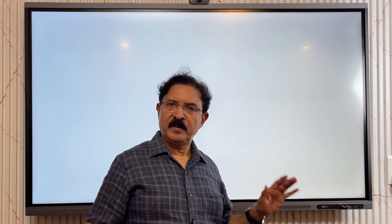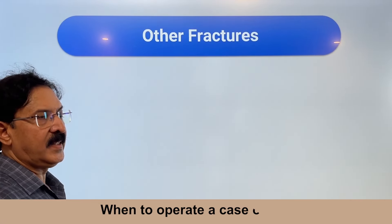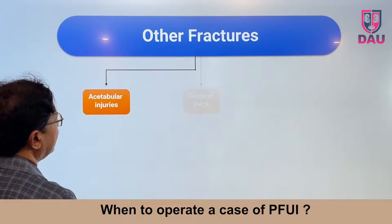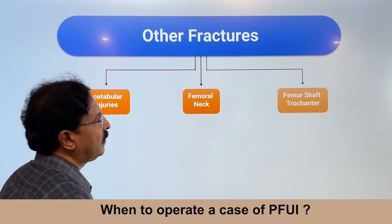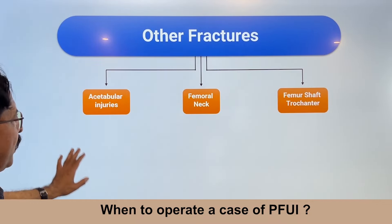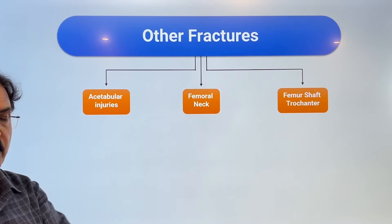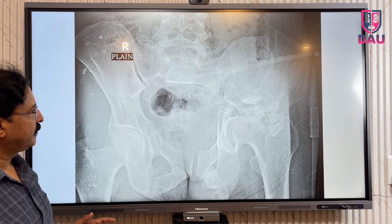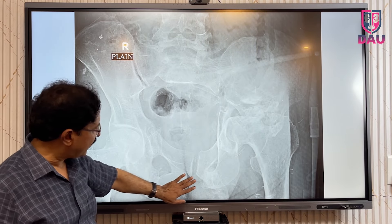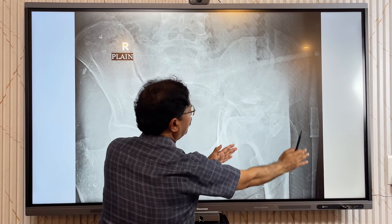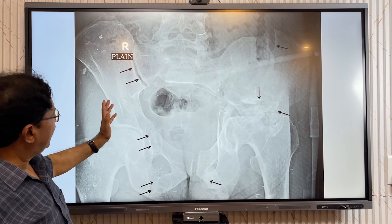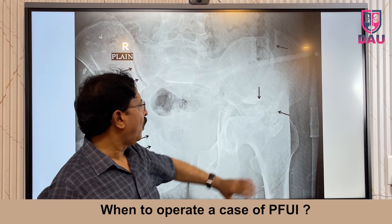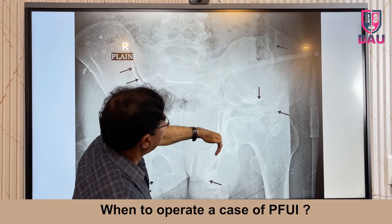We learned about pubic rami and ischial rami. Now going more peripheral in the film, we look for acetabular injuries, injury to the neck of femur, or femoral shaft and trochanter. The problem with these injuries is not that they directly influence your urethroplasty procedure, but that they greatly influence patient positioning for surgery. Look at this film — as you go from center to periphery, you will see many injuries at other places, including injury to the trochanter and acetabulum of this patient.